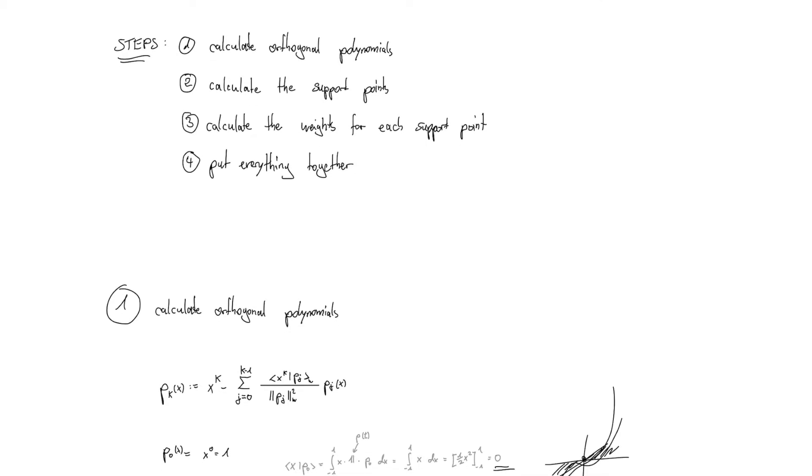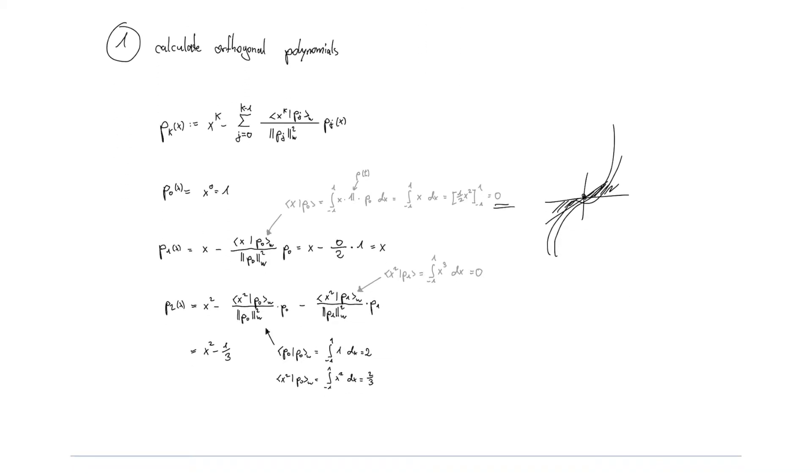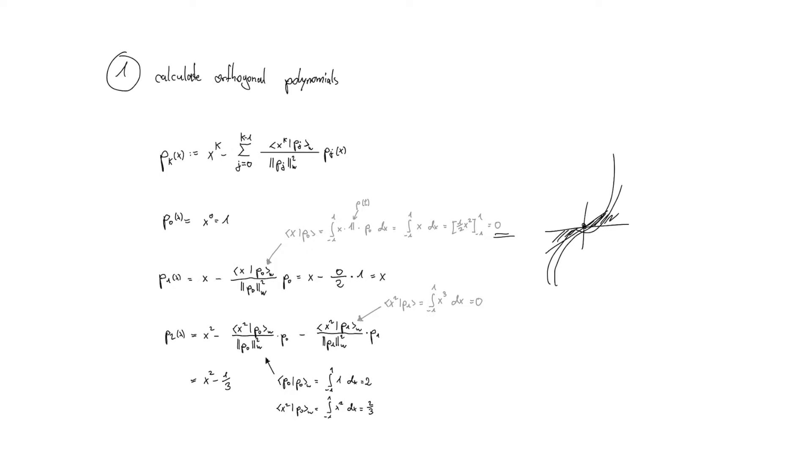Now we can start with the first step where we will use this formula which is similar to the Gram-Schmidt procedure to orthogonalize polynomials to each other. In the end we have three orthogonal polynomials. The first one is very easy, it's just one.